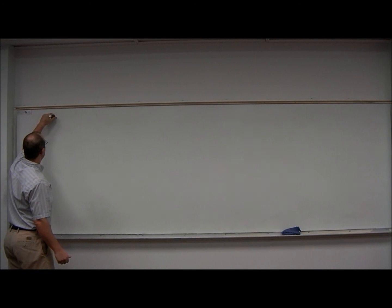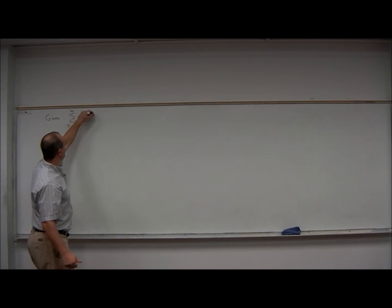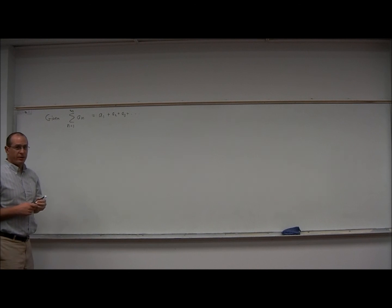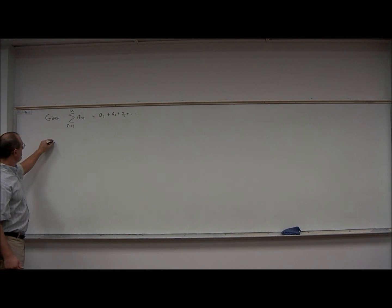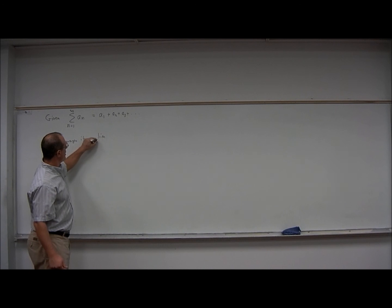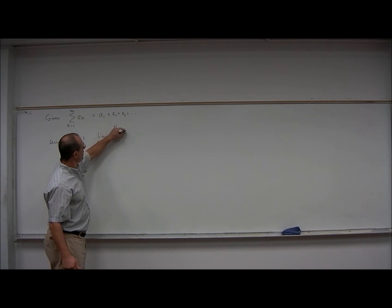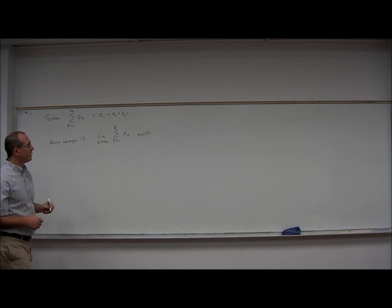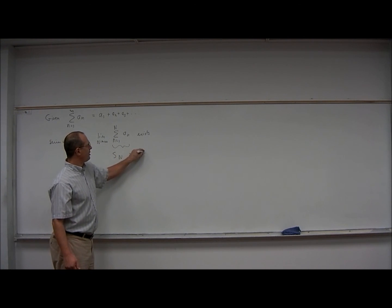Suppose we're given an infinite series — we're trying to add up the numbers a1 plus a2 plus a3, etc. We say that this series converges if the limit as capital N goes to infinity of the summation n equals 1 to capital N of a sub n exists. This is what's called the n-th partial sum, s sub capital N — that would be the capital N-th partial sum.